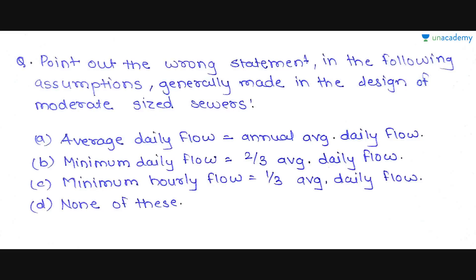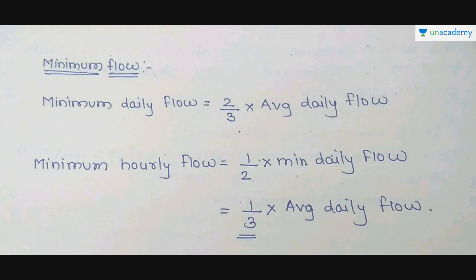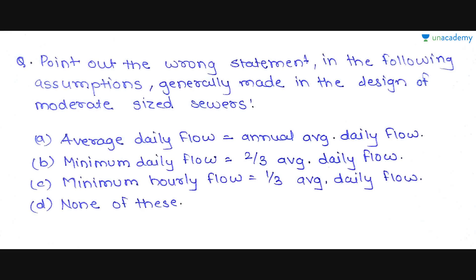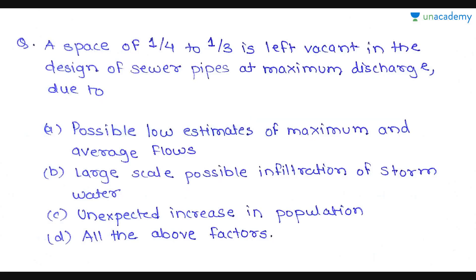The next question: 'Point out the wrong statement in the following assumptions generally made in the design of moderate-sized sewers.' Option A — average daily flow equals annual average daily flow; Option B — minimum daily flow equals two-thirds average daily flow; Option C — minimum hourly flow equals one-third average daily flow; Option D — none of these. Since all three formulas are correct as explained previously, none of the statements are wrong. Option D is the correct answer.